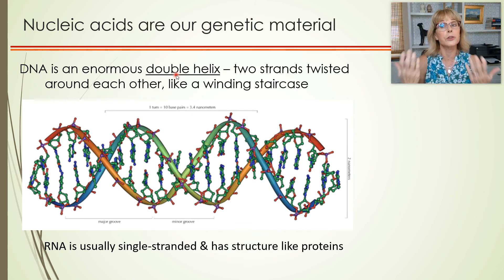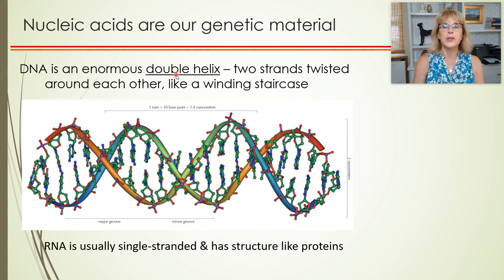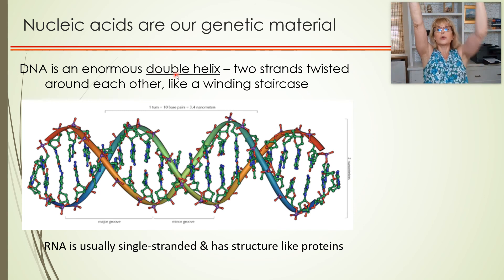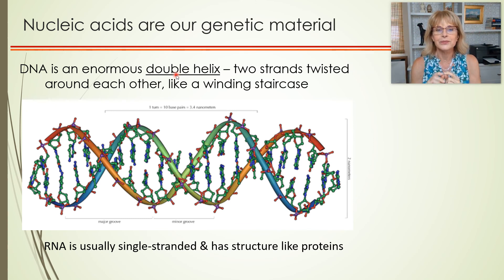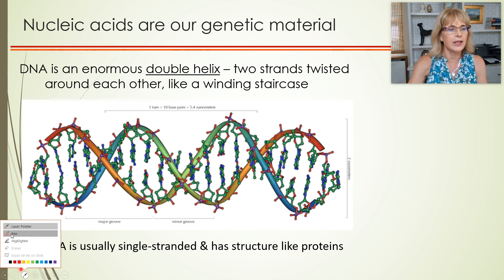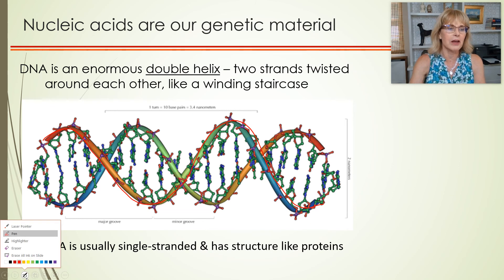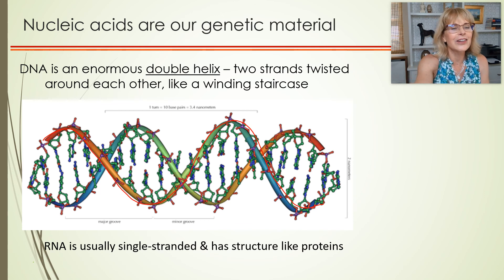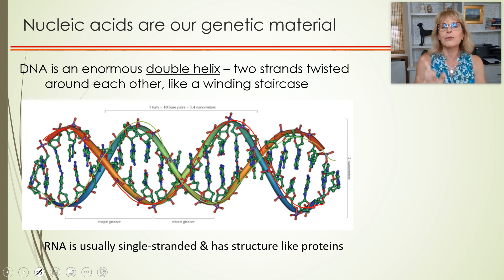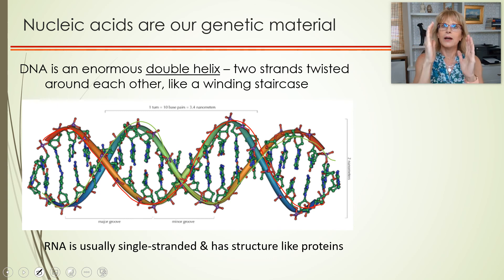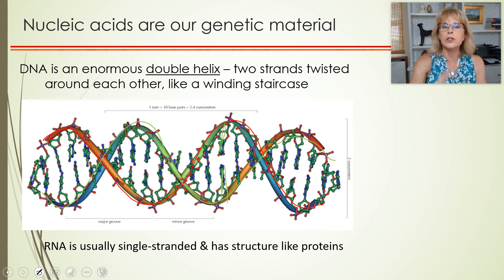DNA is organized into a structure called the double helix. A helix is a spring-like or spiral shape; a double helix is two of these spirals wrapped around each other. Every molecule of DNA is made out of two different strands. The two strands are wrapped around each other and attached in the center by hydrogen bonds between the nitrogenous bases.